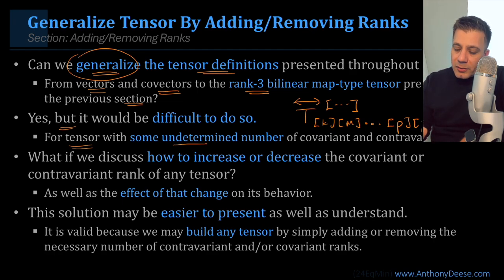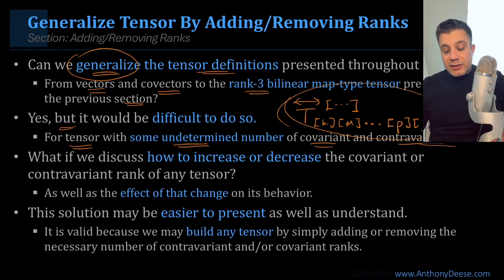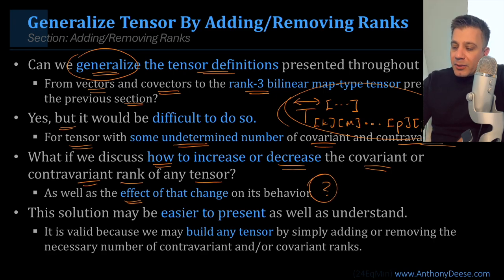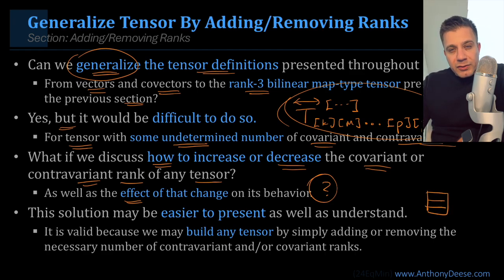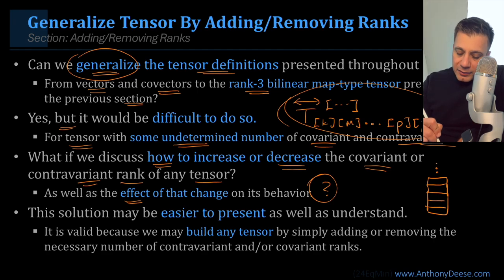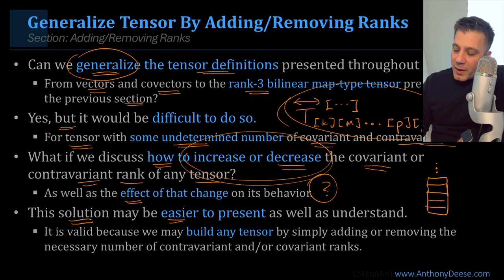For a tensor with some undetermined number of covariant and contravariant ranks, it's going to be difficult to present in an easily comprehensible way. So instead, what if we discuss how to increase or decrease the covariant or contravariant rank of any tensor, as well as the effect of that change on its behavior? This is very similar to the building analogy: if someone wants to know how to build a 10-story building, we teach them how to go from three to four, four to five, and then they simply extend that process.